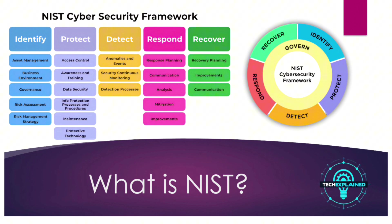Let's be real for a second — no system is completely foolproof. That's why you need to be able to detect when something goes wrong. This is about setting up systems to monitor for unusual activity. Is there a login attempt from a strange location? Are files being accessed in ways that don't make sense? This kind of detection is critical because the sooner you know something's off, the faster you can do something about it. And in cybersecurity, speed can make all the difference.